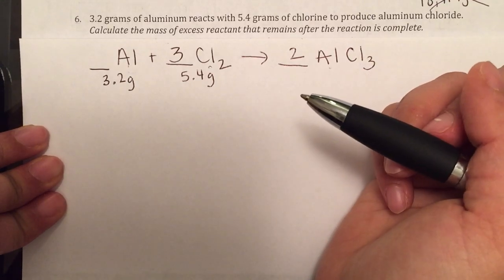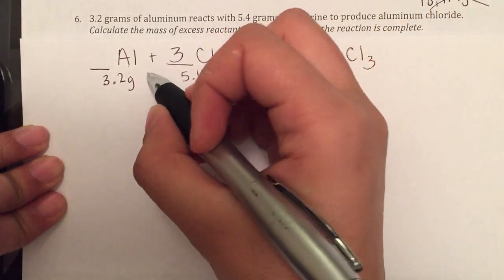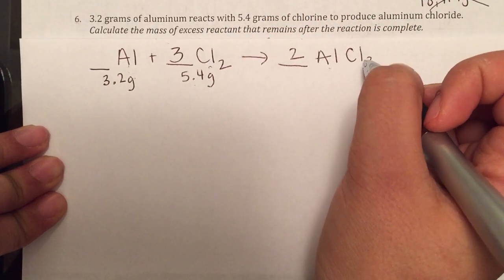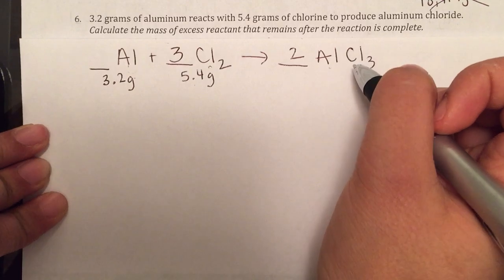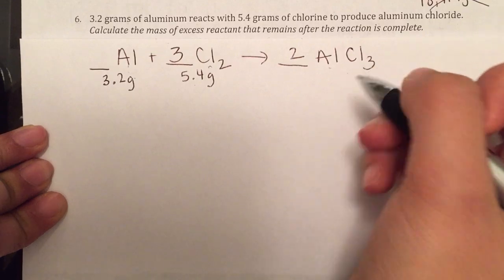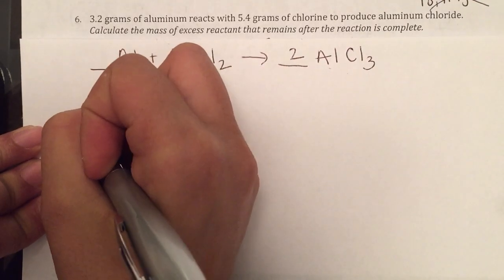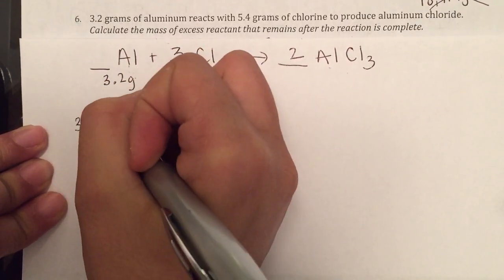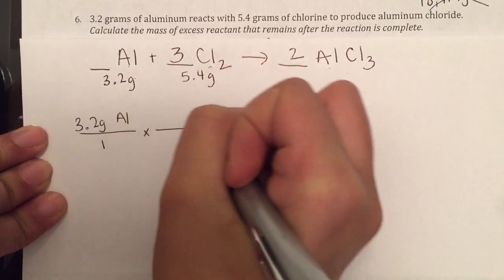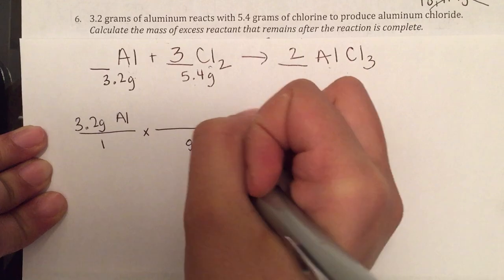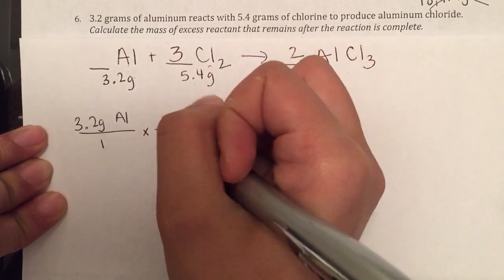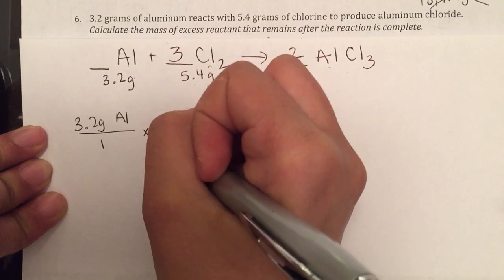So first, let's figure out who is the excess reactant. We're going to compare both of these amounts to how much of the product we're going to produce. I'm going to write 3.2 grams of aluminum, put that over 1. I'm going to convert grams of aluminum to moles of aluminum and get the mass from the periodic table.